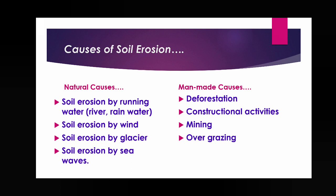Man-made causes include deforestation, because the roots of plants hold and compact the soil protecting it from erosion. Constructional activities involve digging land and destroying soil structure and compactness. Mining also requires digging the land. Overgrazing means animals walking on grassland loosen the top soil layer, accelerating the rate of erosion.